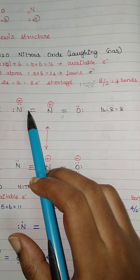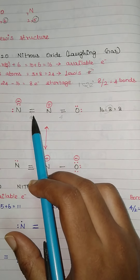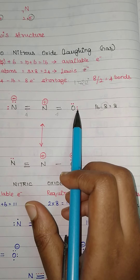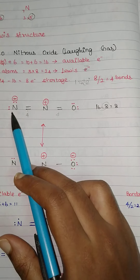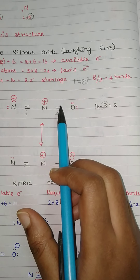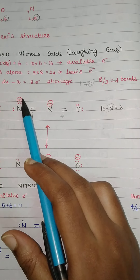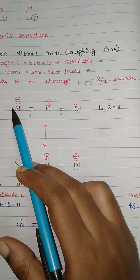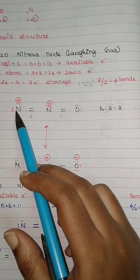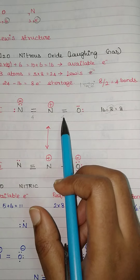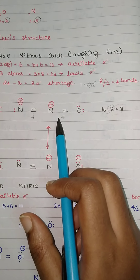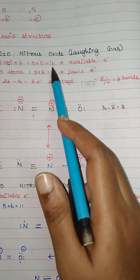Next, this central nitrogen is having 4 electrons on this side and 4 electrons on the other side, because the double bond is shared by oxygen and nitrogen here — same way the double bond is shared by both nitrogens. So the central nitrogen completes its octet with 4 bonds. If you take the terminal nitrogen, it is having only 4 bond electrons, so the remaining 4 electrons are placed there. Now if you count all electrons — 4 plus 4 plus 4 plus 4 equals 16 — we have used all the electrons. So this is the structure.